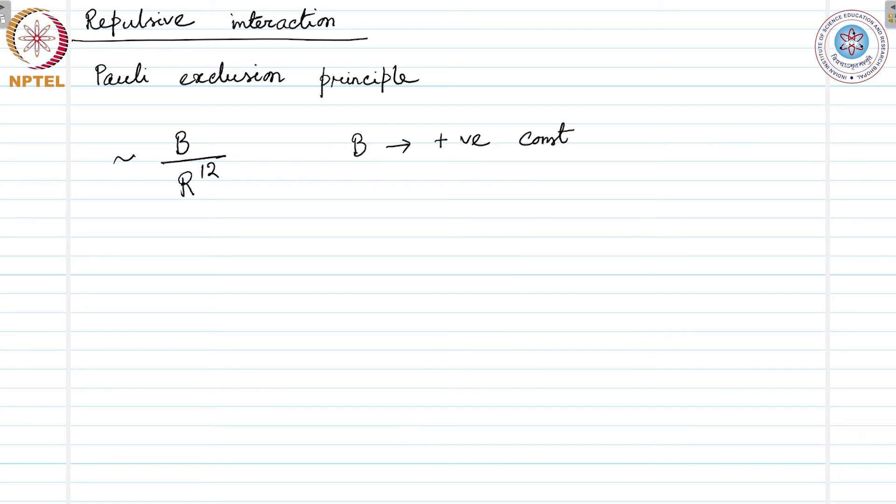If we have this found empirically, then the total potential can be written as U(r) = 4ε[(σ/r)^12 - (σ/r)^6]. This is the repulsive term, and this is the attractive term.